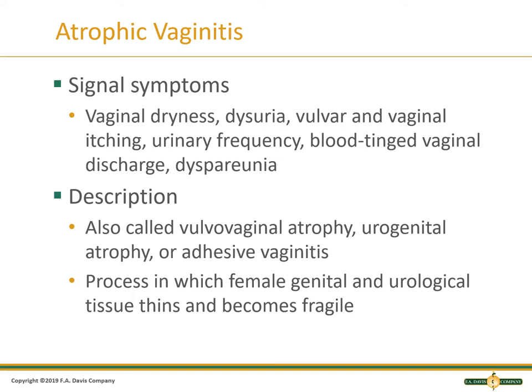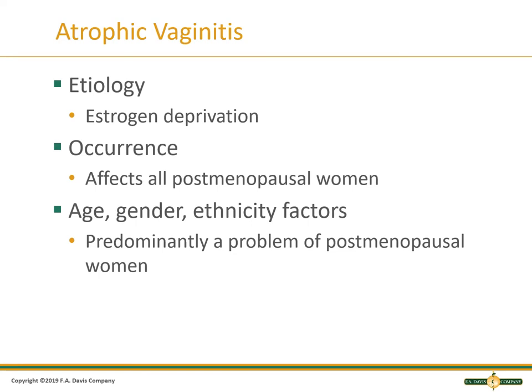We lose estrogen, and a lot of women do not want the risk factors of estrogen replacement with a pill, because we know blood clots is a risk factor and there have been cancer concerns. So there are other treatment plans that are only absorbed into the vaginal wall instead of systemically like a pill. The etiology is estrogen deprivation — it does affect all postmenopausal patients. It's usually an issue for women who are postmenopausal, whether from the normal aging process or, unfortunately, a hysterectomy causing early menopause. You also have to look at the social aspect and dynamics of that.